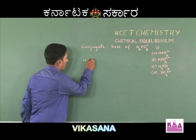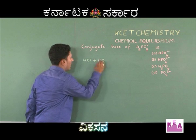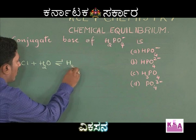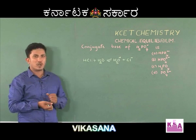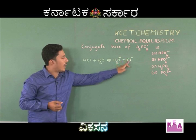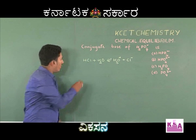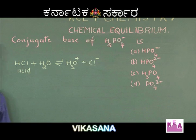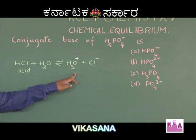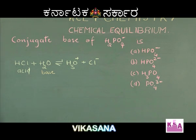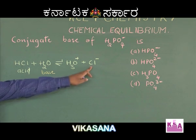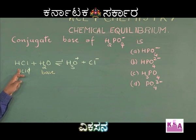Consider the reaction: HCl plus H₂O giving H₃O⁺ plus Cl⁻. If you carefully examine this equation, HCl has donated a proton and formed Cl⁻, so in the forward reaction HCl is an acid. H₂O has accepted the proton donated by HCl and formed H₃O⁺, hence in the forward reaction H₂O is a base. In the backward reaction, Cl⁻ has accepted a proton to form HCl, hence Cl⁻ is a base.